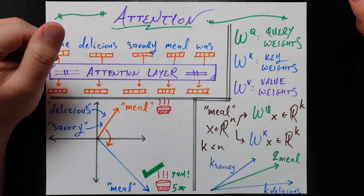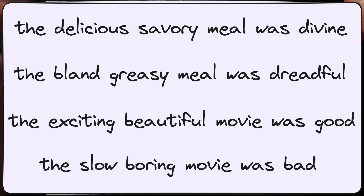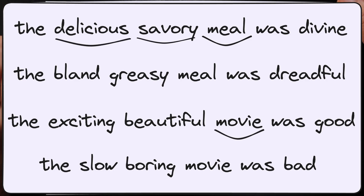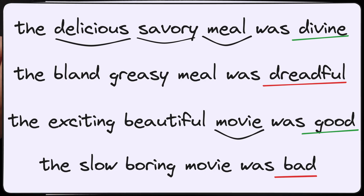As always we're going to have an actual example in this video, which is going to be really basic. Here we have a bunch of reviews of food and movies. In our example there's always six words. The fourth word is always either 'meal' or 'movie.' The second and third words modify that noun using different words for meal and different words for movie. And the last word is some sentiment — either 'good' or 'bad' for a movie, and 'divine' or 'dreadful' for a meal. Our goal today is predicting that final word given the first five words in the sentence.